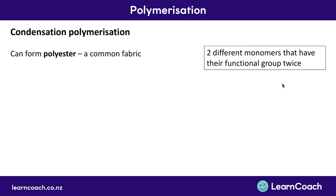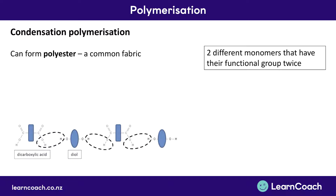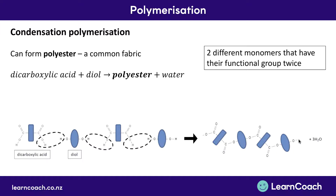Let's start by looking at two different molecules that each have their functional group twice. The first example is forming a polyester — a really common fabric. This is made using a dicarboxylic acid, which has two carboxylic acid groups, and a diol, which is an alcohol with two alcohol groups. The OH from the carboxylic acid group and the H from the diol join together to make H₂O. The leftover oxygen from the alcohol group then joins up to the carbon from the carboxylic acid group. This happens again and again as each water molecule is released, and what you end up with is one long chain where the two original monomers alternate, connected by ester-like bonds. So: a dicarboxylic acid plus a diol gives polyester — many esters — plus water condensed out.